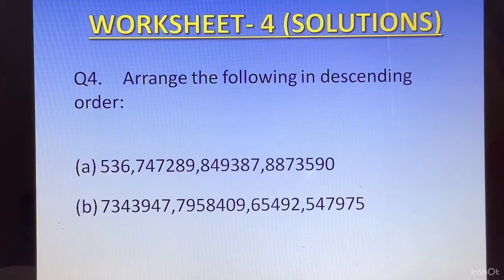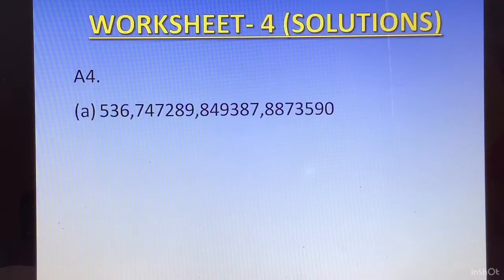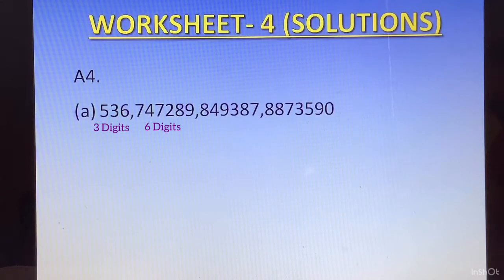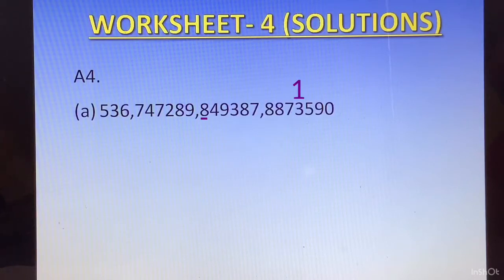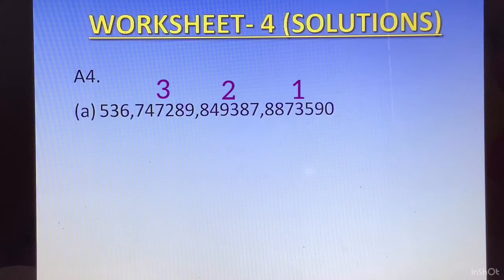Question number 4: arrange the following in descending order, starting with the biggest number first. There are different numbers of digits: the first number has 3 digits, the next has 6, the next has 6, and the last has 7 digits. The greatest is the 7-digit number: 8873590. Then among the two 6-digit numbers, comparing first digits — 8 is greater than 7 — so the next greatest is 849387, followed by 747289. Last is the smallest, the 3-digit number: 536.